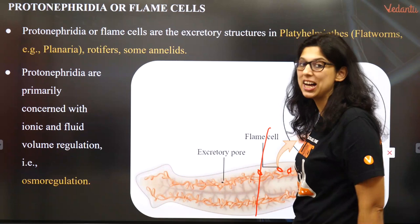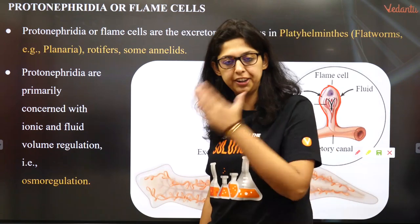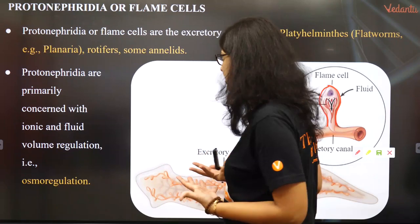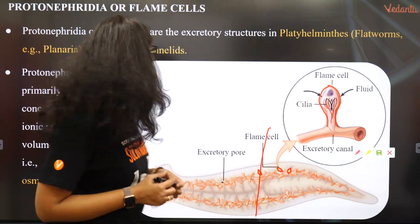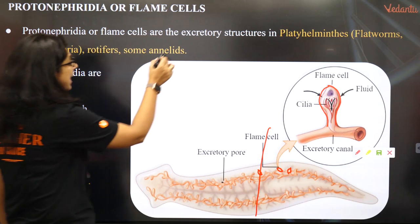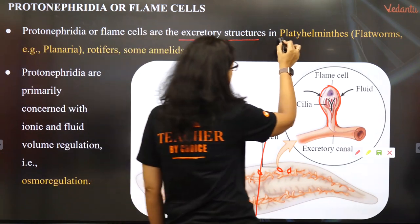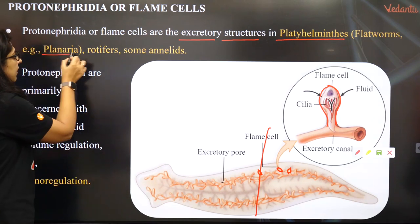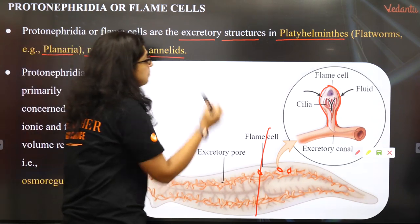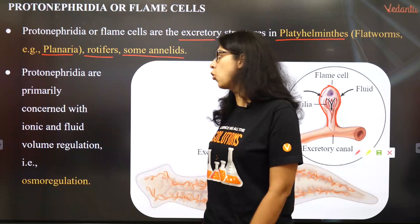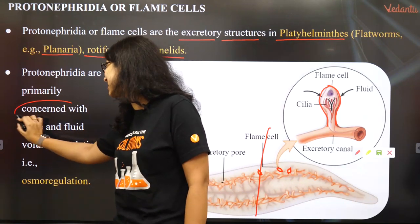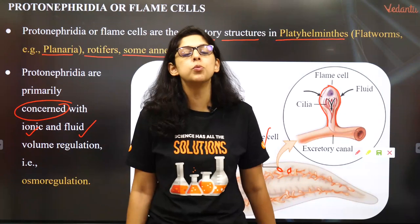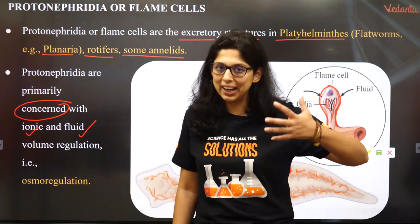Planaria, or dugesia — you can cut it into two via transverse binary fission and it divides into two separate planarias. Protonephridia, or flame cells, are the excretory structures in Platyhelminthes, or flatworms — for example, planaria — as well as in rotifers and some annelids.